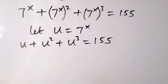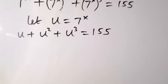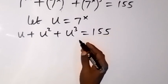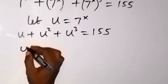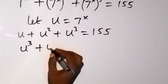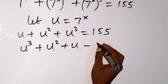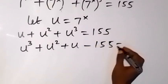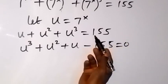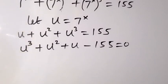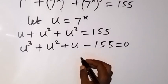We can rearrange by bringing 155 to the other side so that we have u raised to power 3 plus u raised to power 2 plus u minus 155 equals 0. From here we have a cubic equation which we can use synthetic division to solve.